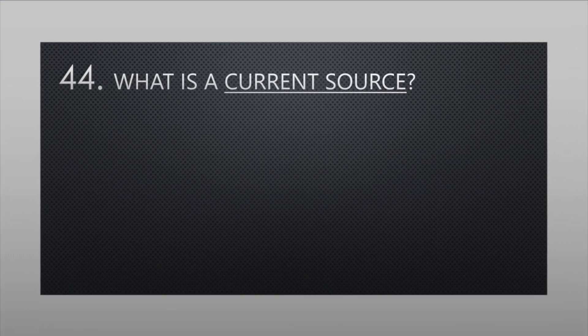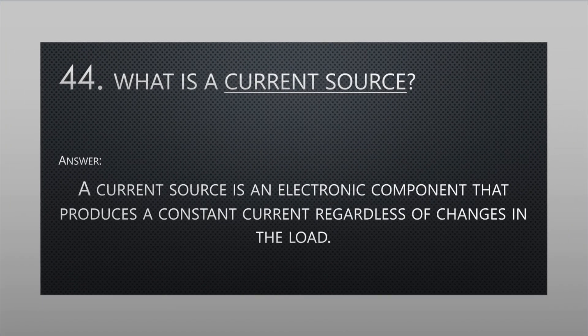What is a current source? A current source is an electronic component that produces a constant current regardless of changes in the load.